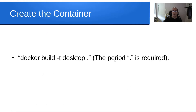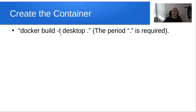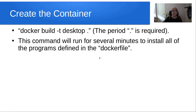We create the container with docker build -t desktop followed by a period. The period is required — it tells it where to build, which is the current folder. This command will run for several minutes to install all the programs defined in the Dockerfile. It's almost like we're building Ubuntu from scratch because the Ubuntu container does not have a desktop, and this will be installing the desktop into the container with the commands we saw on the previous page.